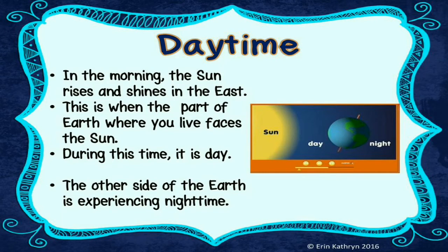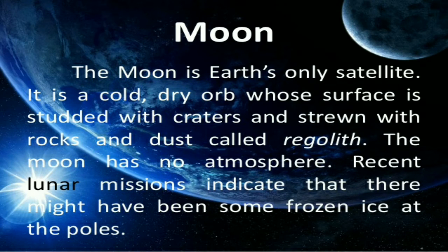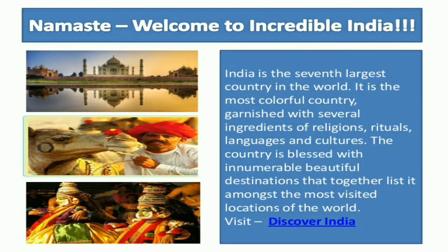Next we learned about daytime: in the morning the Sun rises and shines in the east, it's called daytime, and during this time the part of Earth where you live faces the Sun. Then we learned about the Moon: it is Earth's only satellite, revolves around the Earth. Then we learned about India, our country: it is a colorful country with ingredients of religion, rituals, languages, culture and beautiful destinations.